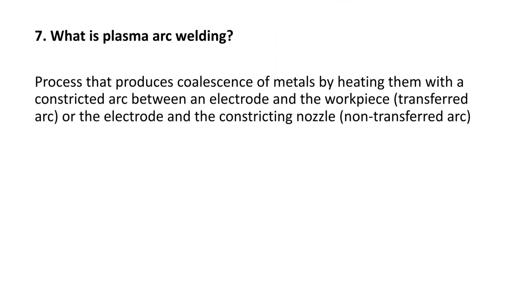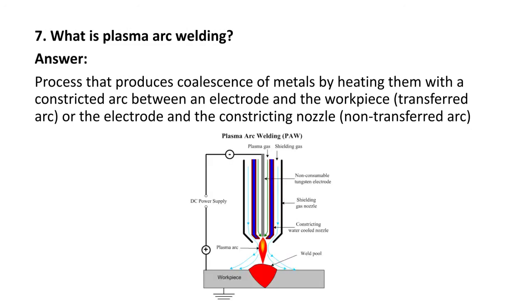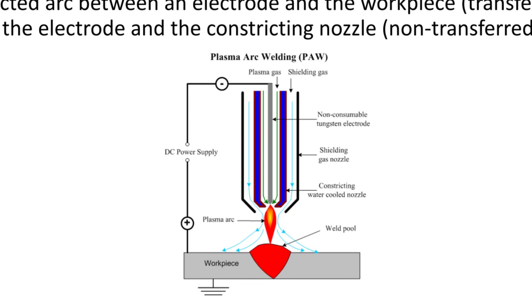Next question: what is plasma arc welding? It is a process that produces coalescence of metals by heating them with a constricting arc between an electrode and the workpiece, or the electrode and the constricting nozzle. Here you can see the schematic of plasma arc welding.